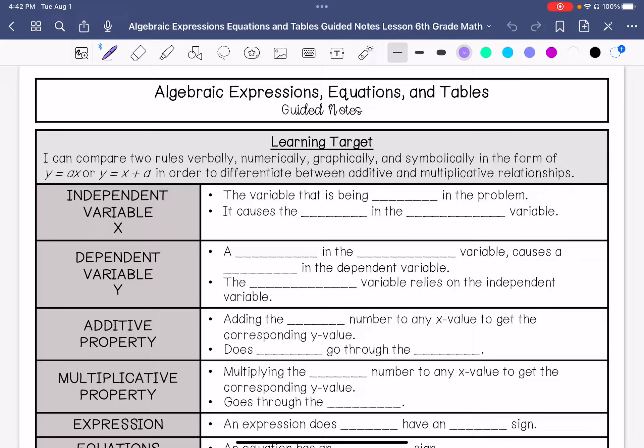Some things we need to go over: The independent variable is the variable that is being controlled in a problem. It causes the change in the dependent variable. In an equation, the independent variable is represented by the letter x and is also on the x-axis.